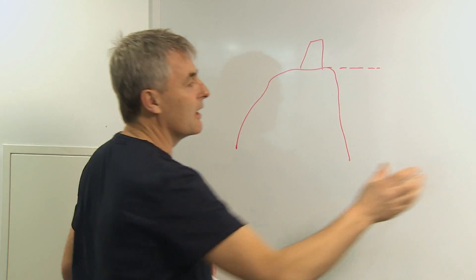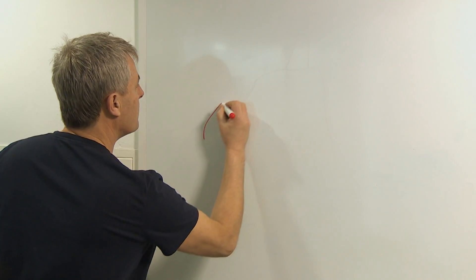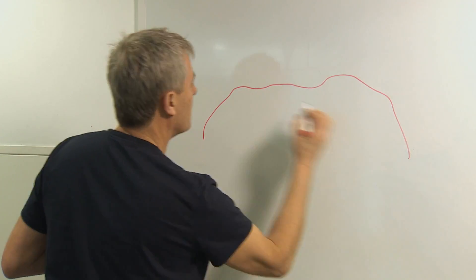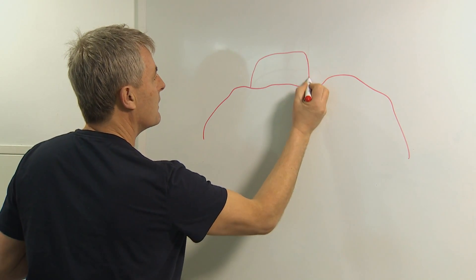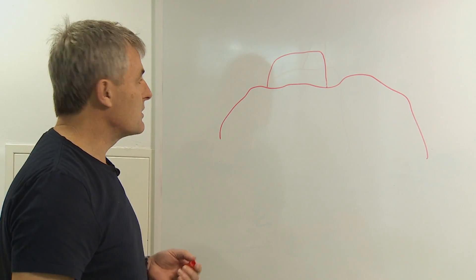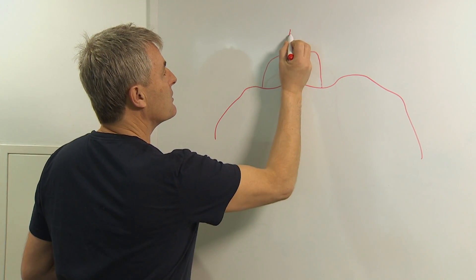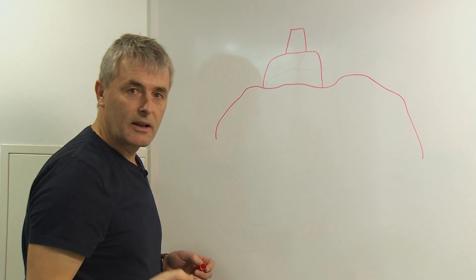But Ben Nevis is slightly different. On top of Ben Nevis we have a man-made cairn. Now this is a feature which sits two or three metres higher than the natural high point of the hill. And on top of that we have our triangulation pillar.